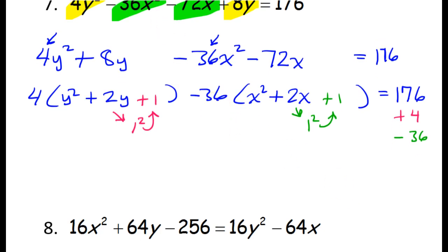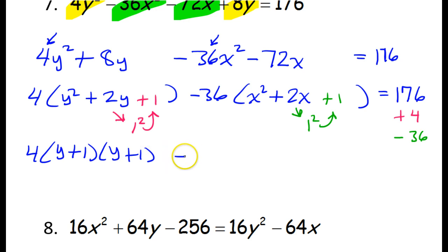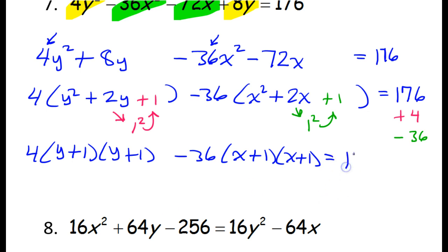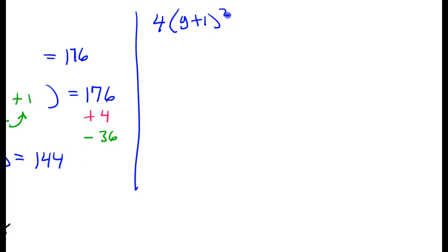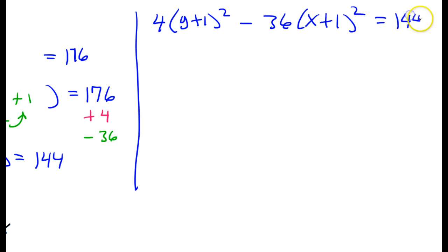Time for some factoring. I'm going to have 4, and this will factor as the same thing twice: y plus 1 times y plus 1. Minus 36 times x plus 1 times x plus 1. Just add these three numbers together — that is 144. Rewriting with y plus 1 squared and x plus 1 squared: 4 times y plus 1 squared minus 36 times x plus 1 squared equals 144.